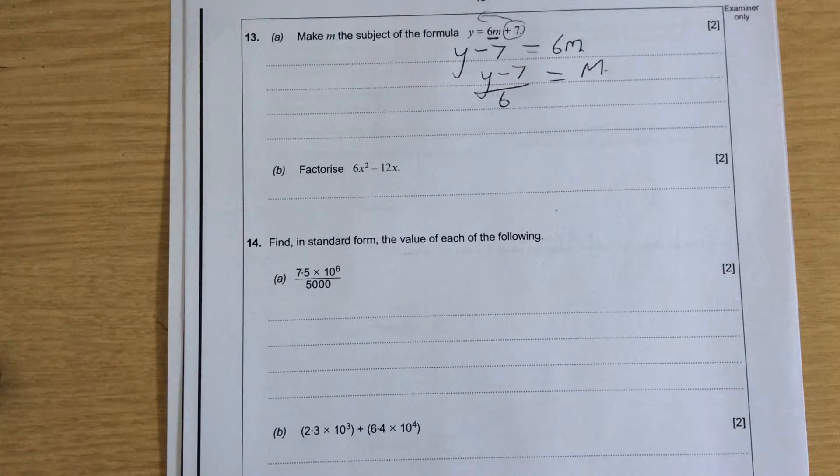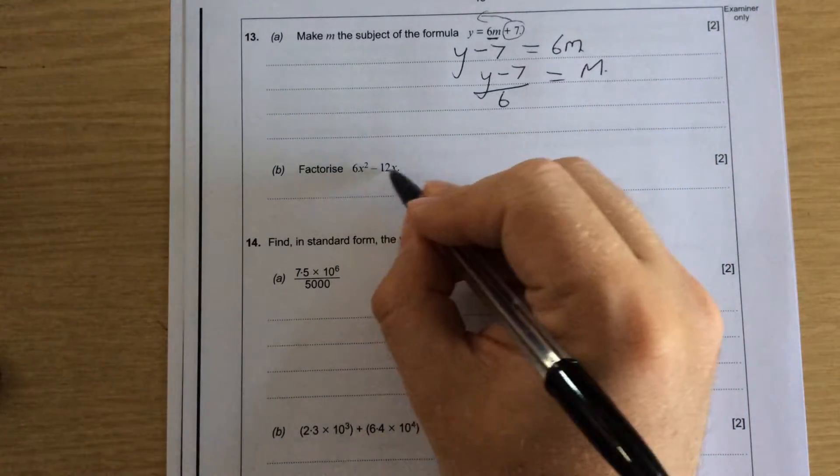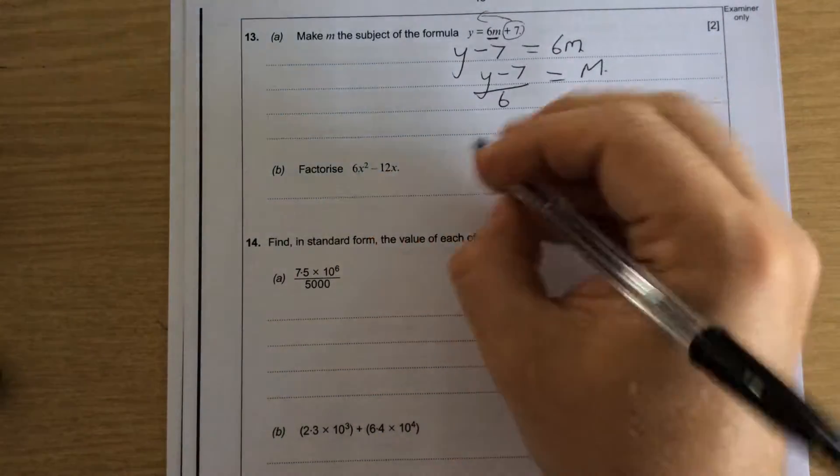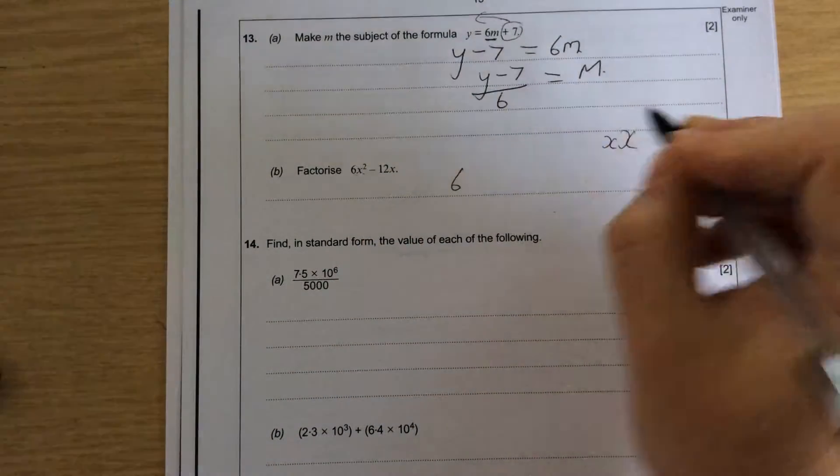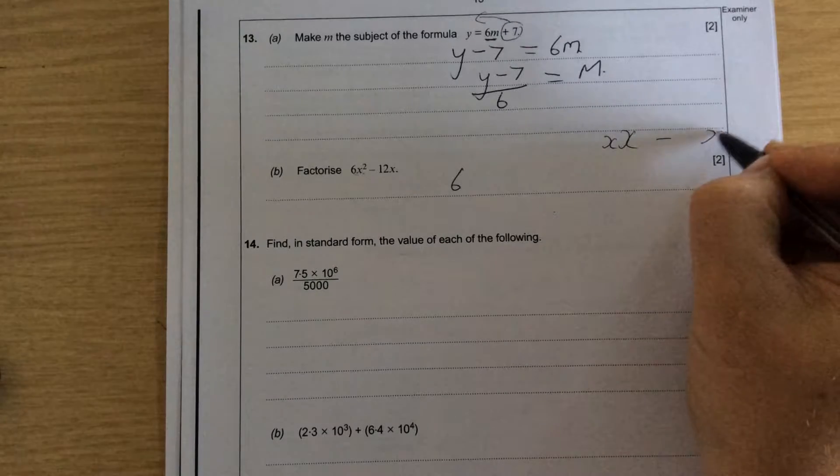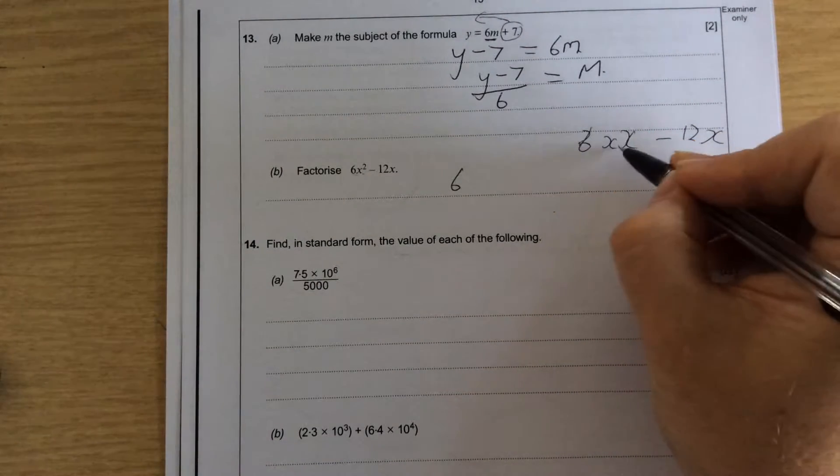When I'm factorizing expressions, I'm looking what is the highest number and letter to go into both. 6 is the highest number and then x squared means x times x and there's also an x at the end with 12. So I can take out one of them x's.